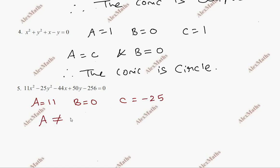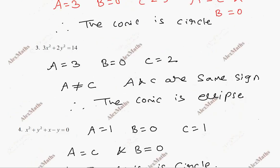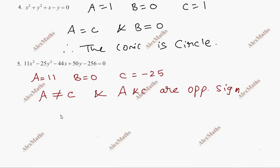We pay attention: A and C are opposite sign and they are not equal. So this is a hyperbola. Therefore the conic is hyperbola.